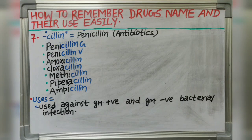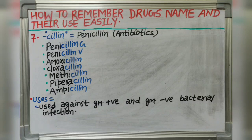Next suffix is -cillin. It indicates penicillin, a broad spectrum antibiotic. Drugs like penicillin G, penicillin V, amoxicillin, cloxacillin, methicillin, piperacillin and ampicillin each end with the suffix -cillin. It is used against gram positive as well as gram negative bacterial infections, including GI tract infection, urinary tract infection and other bacterial infections.